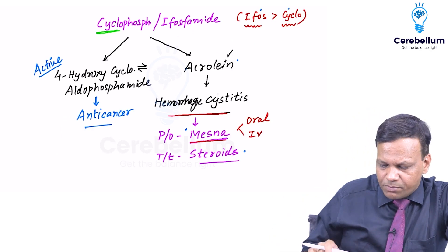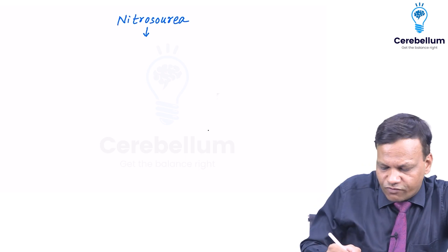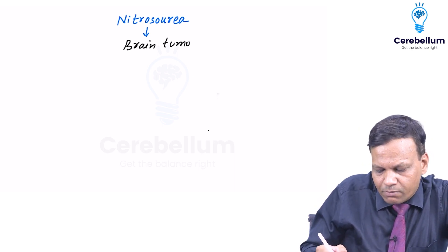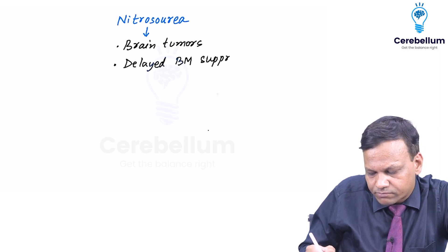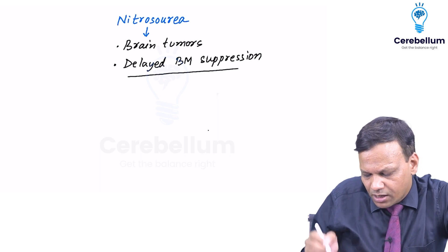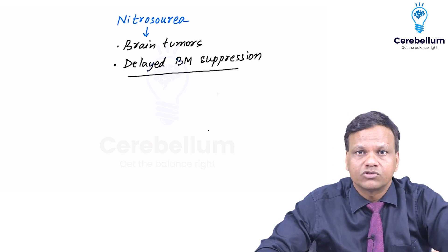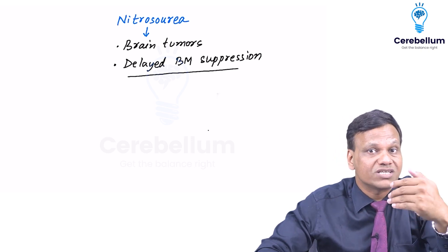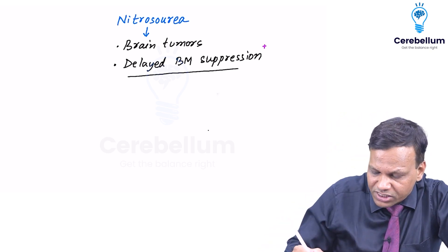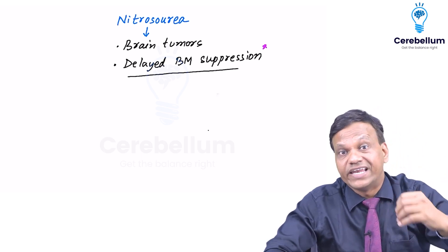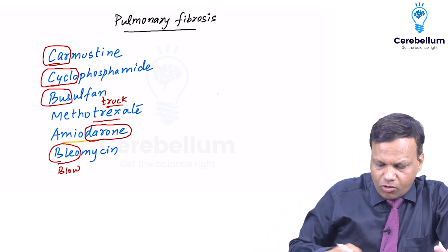Coming to Nitrosoureas: these drugs are usually used for brain tumors. The special point to remember is they cause delayed bone marrow suppression. Normally, bone marrow suppression shows up as decreased blood counts within a few days, but Nitrosoureas do not cause an immediate decrease — it takes longer. If a question asks which anti-cancer drug causes delayed neutropenia, the answer is Nitrosoureas.